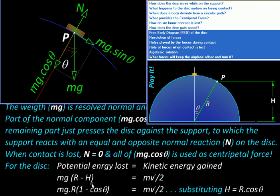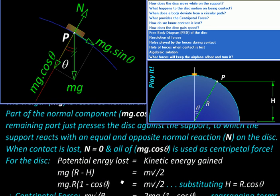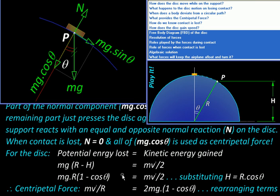Now this height h can be substituted as r cos theta. You can see this h is related to this r and theta. Then centripetal force can be had by moving this r to the right side and moving this 2 on the left side. So we will be left with mv square by r equal to 2 mg times 1 minus cos theta.